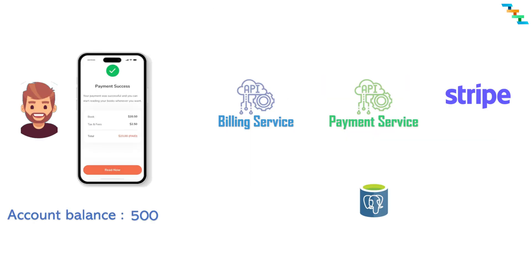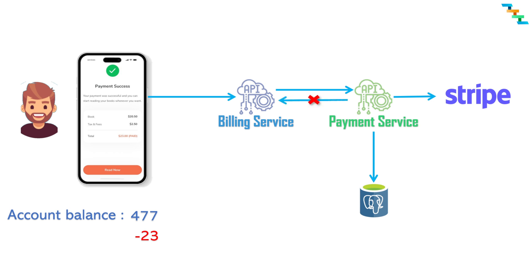Let's see this with an example: a user trying to pay a bill from a mobile app. The mobile app makes the API call to the billing service, and the billing service calls the payment service. Let's assume this payment service made all the necessary processing and deducted the money from the user account, but the acknowledgement to the billing service failed. Since the billing service didn't receive the acknowledgement, the billing service retries the payment API call again.